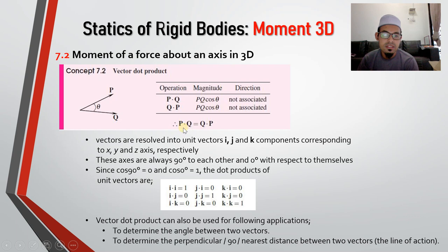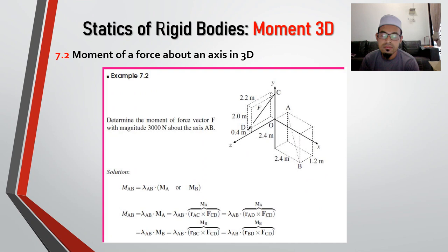So look at this concept. Let's say we have P dot with Q operation. Then that one is basically same as if we have Q dot P. Not much different. So vector is resolved into unit vectors I, J, and K components corresponding to X, Y, and Z axis respectively. These axis are always 90 degree to each other and 0 degree with respect to themself. Since cos 90 degree equals to 0 and cos 0 equals to 1, the dot products of unit vectors are I dot I equals to 1, J dot J equals to 1, and K dot K equals to 1. And then the rest must be 0.